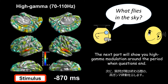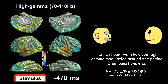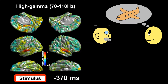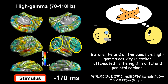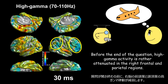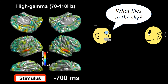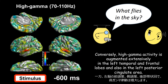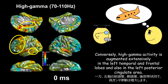The next part will show you high gamma modulation around the period when questions end. Before the end of the question, high gamma activity is rather attenuated in the right frontal and parietal regions. Conversely, high gamma activity is augmented extensively in the left temporal and frontal lobes and also in the left posterior cingulate area.